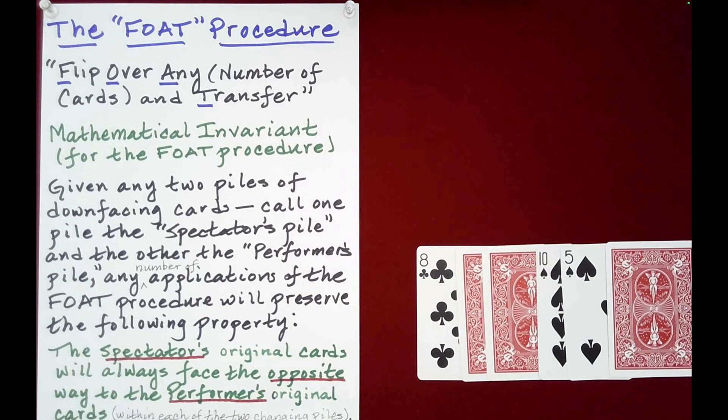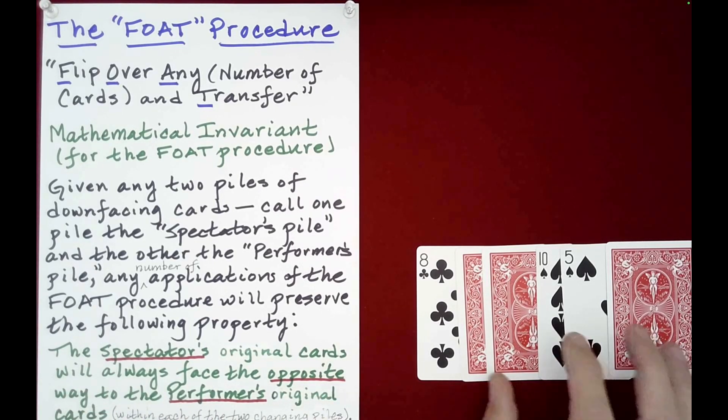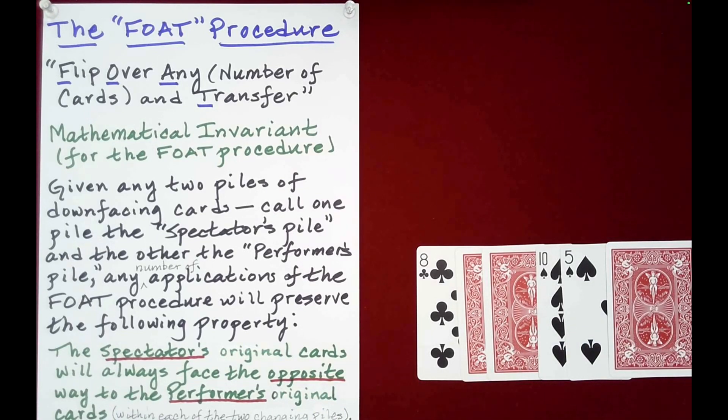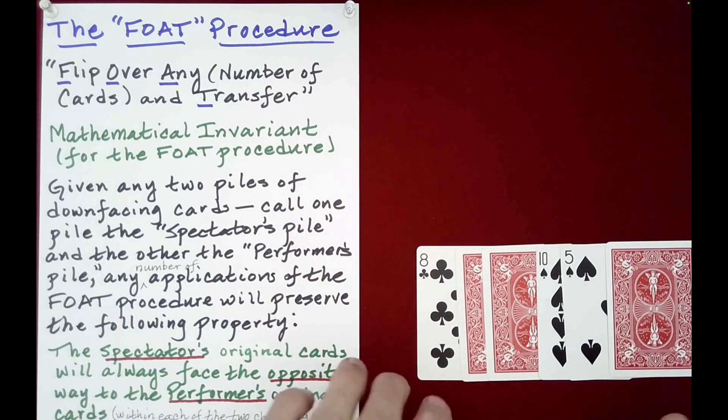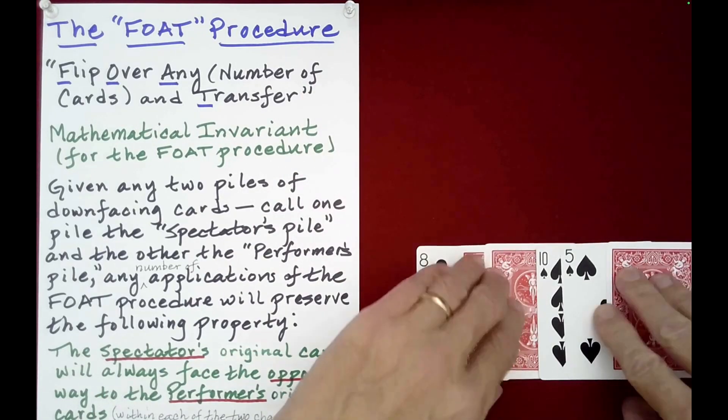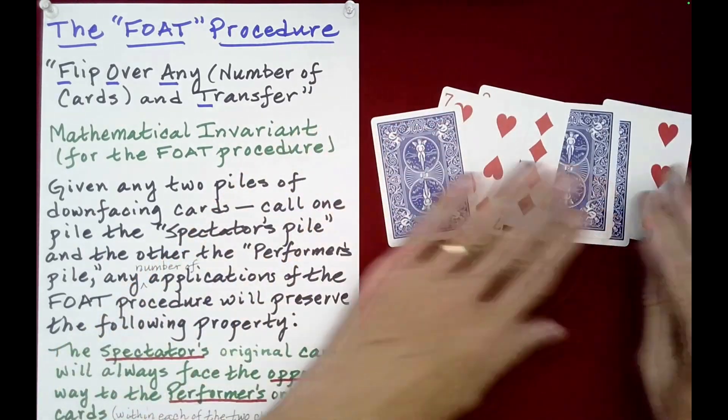So it doesn't matter how many times you go back and forth, as long as you're flipping them before you set them down on the other pile. This will always happen. It will always be the case that if there are spectator and performer cards within a given pile, they will face the opposite way to each other. Technically, it doesn't matter which pile you flip at the very end. You're going to finish with a packet that satisfies this. Namely, the performer's original cards will be facing the opposite way to the spectator's original cards. And so the only thing the performer needs to watch for for this final step is they need to know which cards they want facing up and which cards they want facing down.